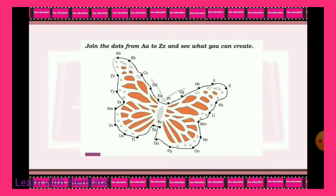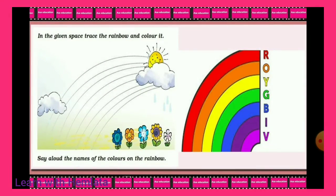Your next exercise is to join the dots from A to Z — capital A, small A to capital Z, small Z — and see what you can create. Agar hum A se Z tak join kar denge, tracing kar denge, to ek butterfly banegi. Beautiful butterfly! Next exercise: in the given space, trace the rainbow and color it. We have given you the rainbow colors — just trace the line and color all the rainbow colors in the picture, and your beautiful rainbow will be drawn.